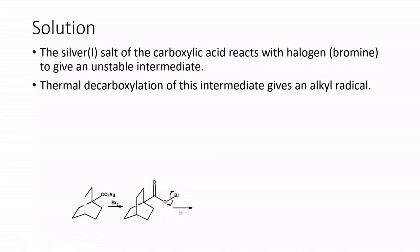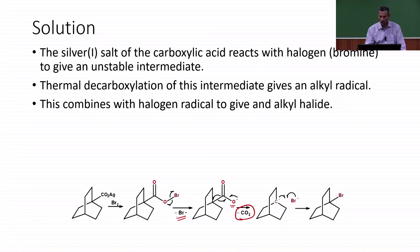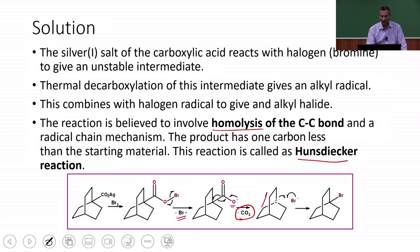During the thermal decarboxylation, there is a homolytic cleavage of this particular bond, which gives an oxy radical. This oxy radical undergoes thermal decarboxylation — that is, loss of CO₂ — and we end up with an alkyl radical. In the first step, a bromine radical is liberated. The liberated bromine radical now reacts with the alkyl radical to give the alkyl halide.